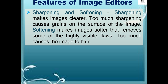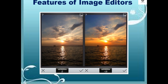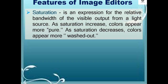Sharpening makes images clearer, but too much sharpening causes artifacts at the surface of the image. Softening makes images softer and removes some highly visible flaws, but too much causes the image to blur. Saturation is an expression for the relative bandwidth of the visible output from a light source. As saturation increases, colors appear more pure; as saturation decreases, colors appear more washed out.